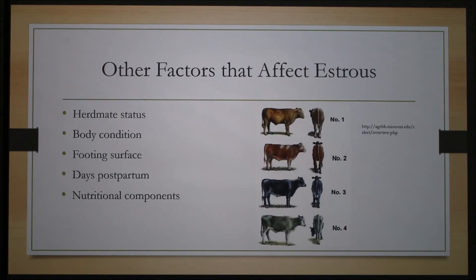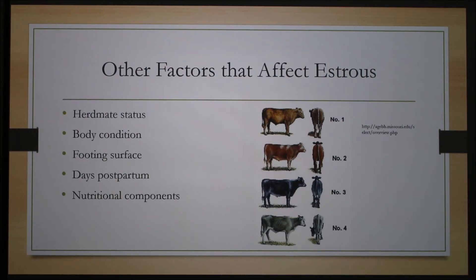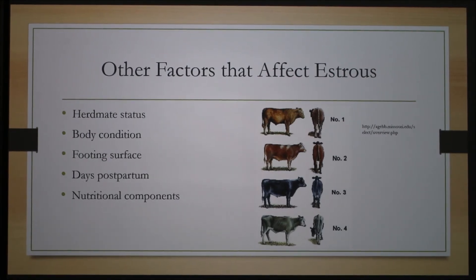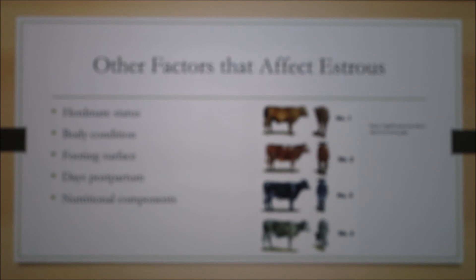Environmental or internal factors that are not necessarily estrogenic in nature but still can affect estrus include what cycle stage the cow's herd mates are in, how thin or fat the cow is — so a body condition score — the type of footing the cow is housed on. Cows housed on slippery surfaces will not mount other cows. Also relevant are days since the cow last calved and nutritional composition of the cow's diet. If you suspect environmental estrogen problems, these may be some factors you'd like to check first.